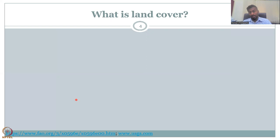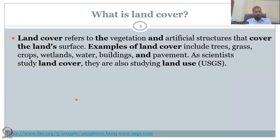Since we now know what the hydrological cycle is and how land cover and land use play a vital role in getting water, soil, and nutrients to the rural environment, let us get into the details of land use and land cover. First, let's look at land cover. Land cover refers to, as per the USGS, the vegetation and artificial structures that are on top of the land and covering it.